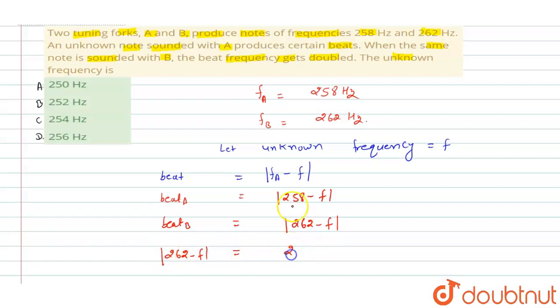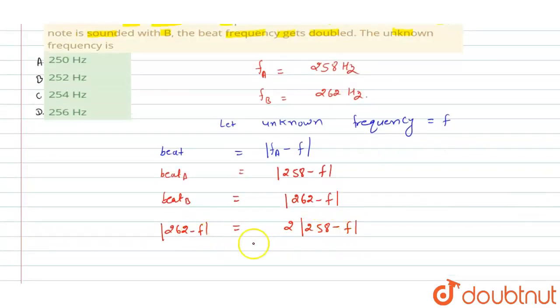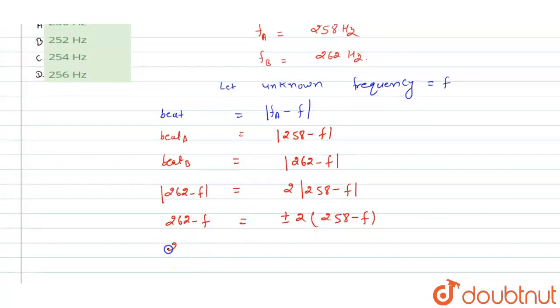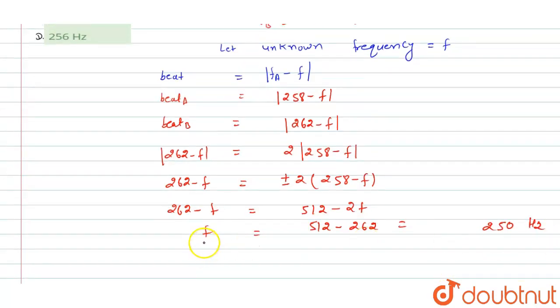Now this is a modulus. If we will take plus minus, modulus means we have to take plus or minus. So we can write here 262 minus f will be equal to plus minus 2 into 258 minus f. First we are taking positive, so 262 minus f will be equal to 512 minus 2f. So this will be equal to f equal to 512 minus 262, this will be equal to - 5 minus 2 will be 2, so unknown frequency f equal to we are getting 250 hertz if we will take positive sign.